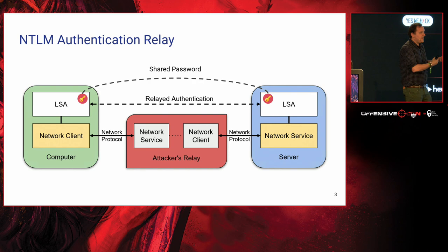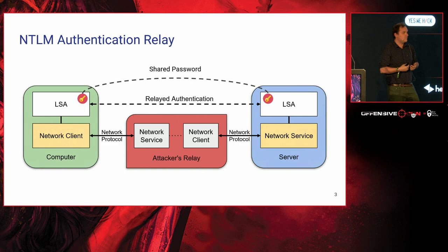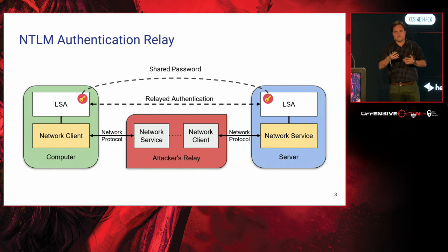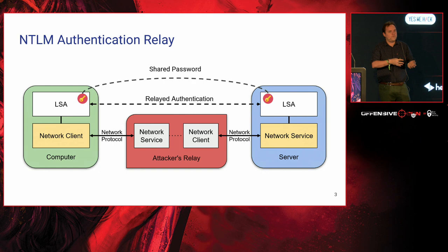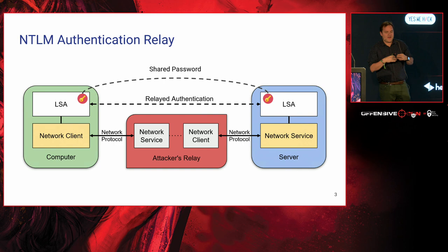NTLM was designed with many security issues or design flaws. One of the most egregious is the ability to be relayed. NTLM originally never specified the target of its authentication, so it didn't matter whether you were authenticating to one server or a different server. This could result in a relay attack where an attacker induces a network client to connect to them, collects the credentials, and then forwards that authentication traffic to a service they want to compromise — potentially impersonating that user on that service.